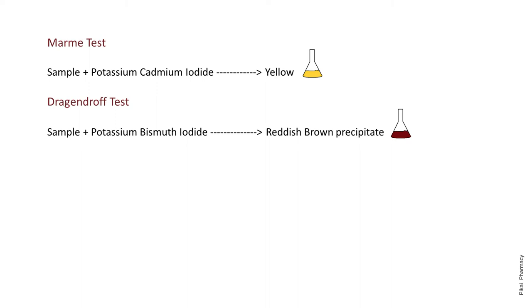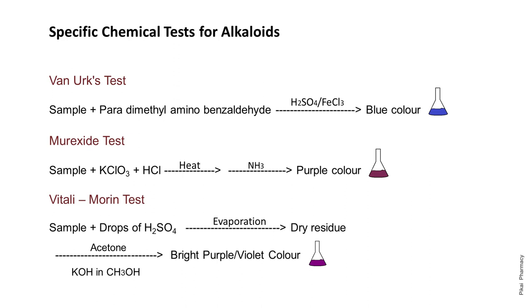The fifth common test is the Dragendorff test, where the reagent is potassium bismuth iodide, also known as Kraut's reagent. When the sample reacts with potassium bismuth iodide, it gives a reddish-brown precipitate, which indicates a positive Dragendorff test — meaning the sample is an alkaloid or contains alkaloid. This concludes the common chemical tests for alkaloids.